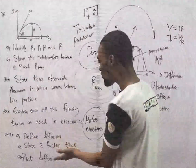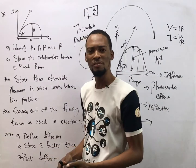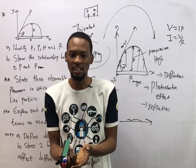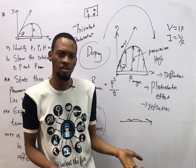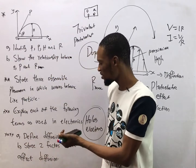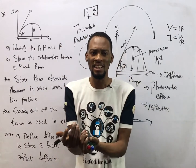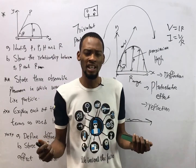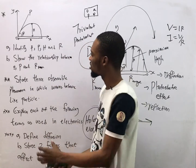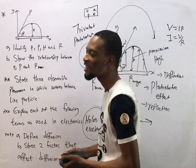Define diffusion and two factors that affect diffusion. Diffusion is simply the movement of molecules from a region of higher concentration to a place of lower concentration. The factors that affect diffusion are mass — the bigger the material, the more it will diffuse — and temperature can also affect diffusion.